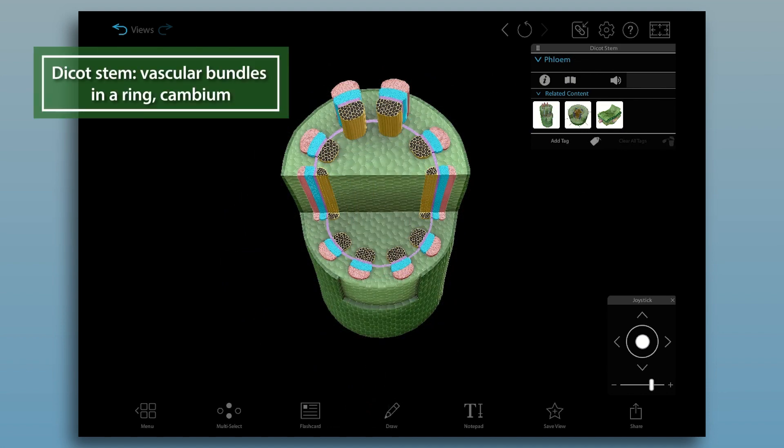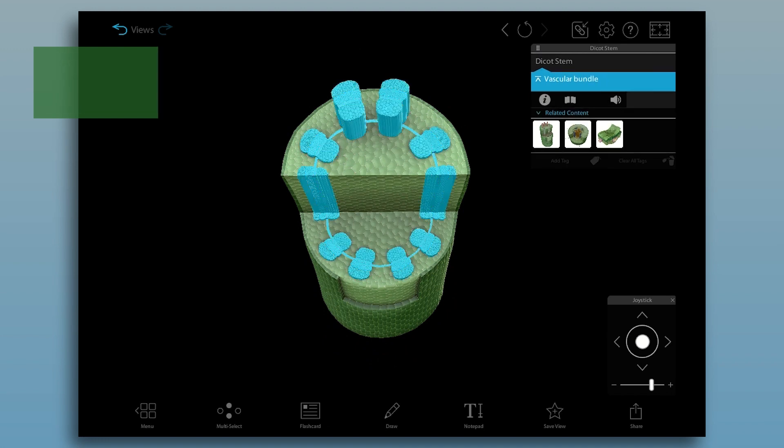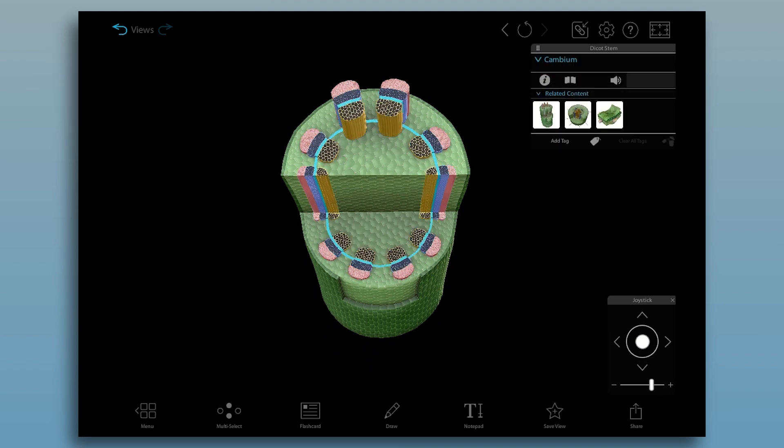In dicot stems, the vascular bundles are arranged in a ring. Dicot stems also contain cambium, like the root.